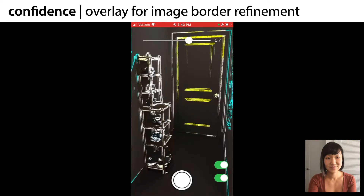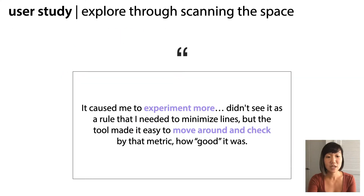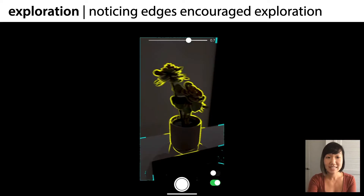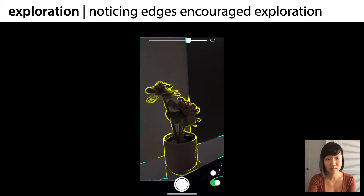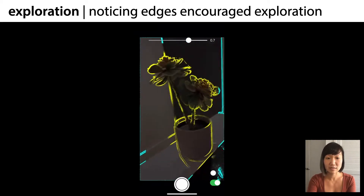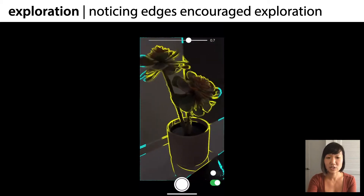In addition to encouraging confidence, we found that the tool further encouraged creativity through exploring the space in new ways. "It caused me to experiment more. I didn't see it as a rule that I needed to minimize lines, but the tool made it easy to move around and check by that metric how good it was." Here you can see how an unexpected edge highlight encourages the participant to explore different backgrounds and compositions. This participant notices an unwanted edge at the bottom of the plant from the stove top, so she tries out different camera angles to remove the stove.